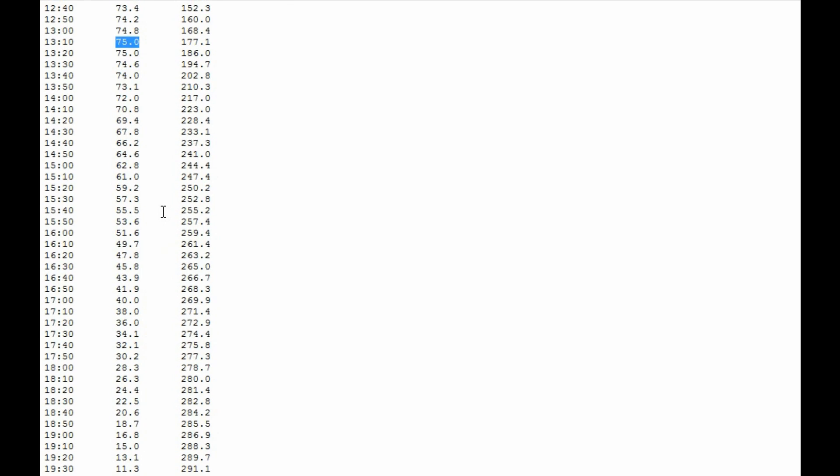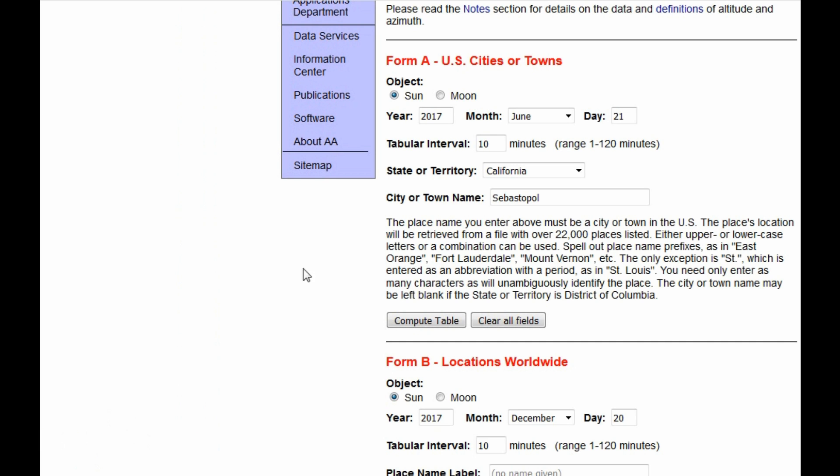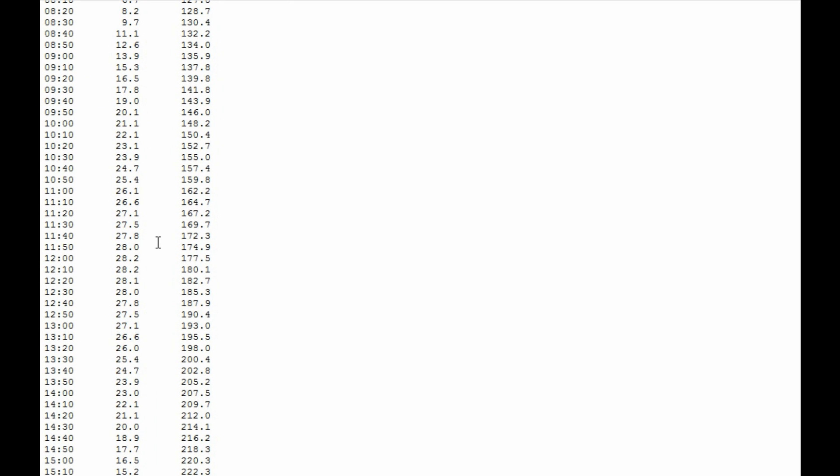Now let's go back to the form and check the winter solstice, December 21st. Again, click calculate table and scroll down to find the highest altitude. Here it looks like the sun peaks in the sky at about 28 degrees.